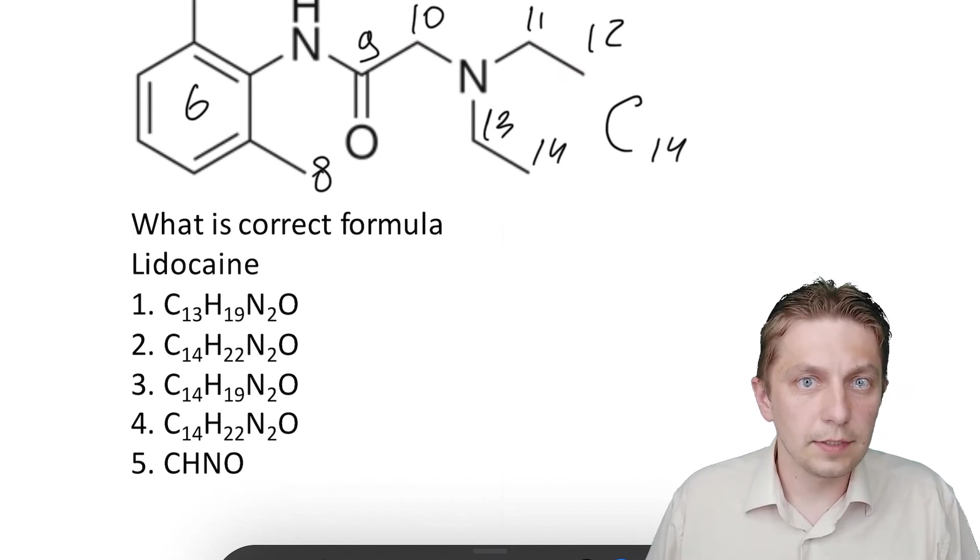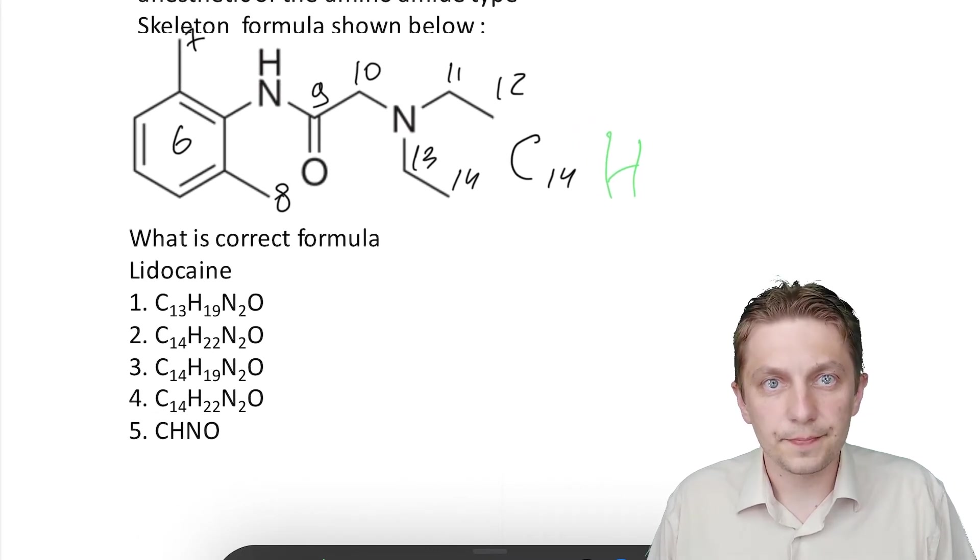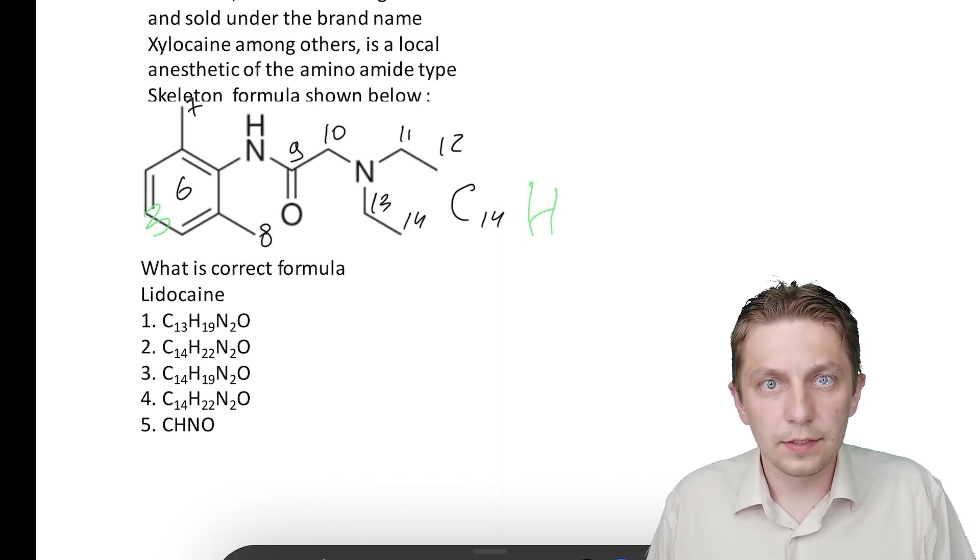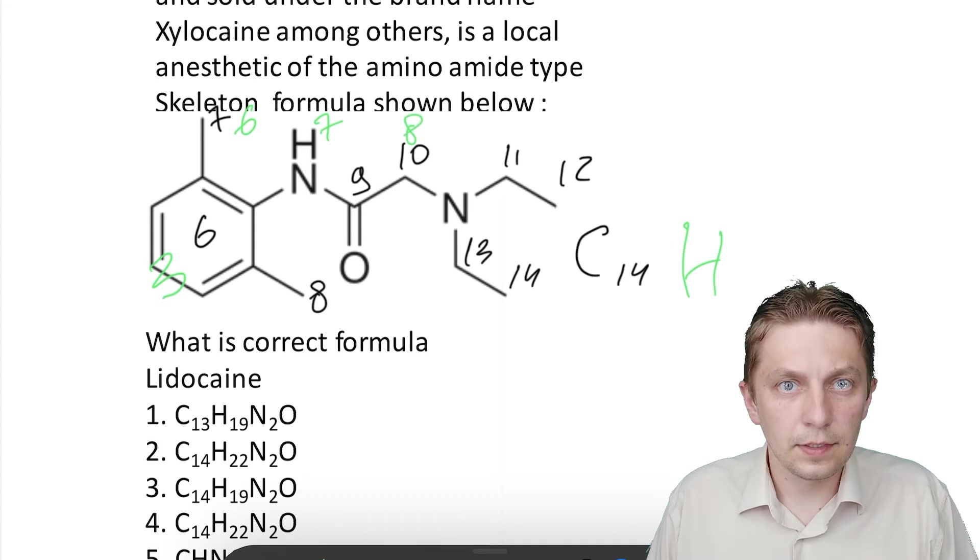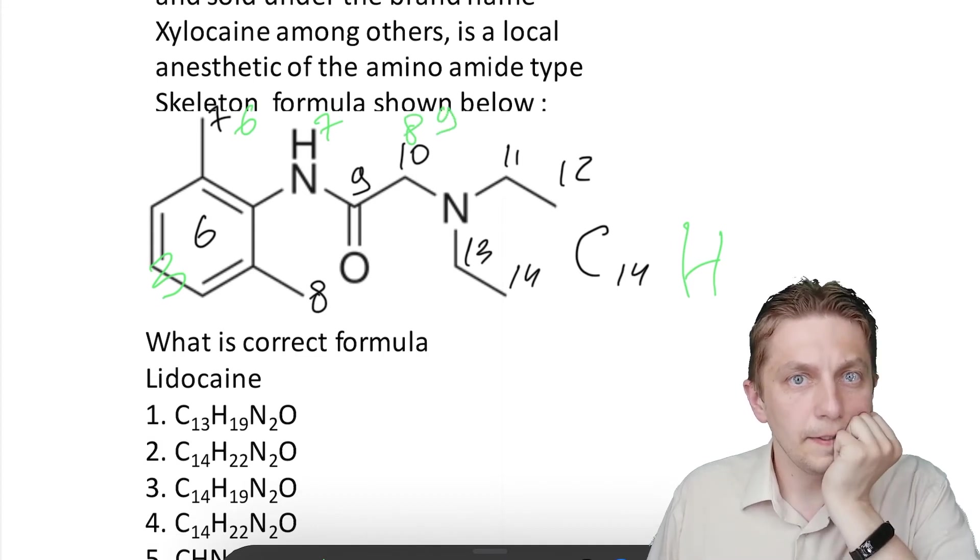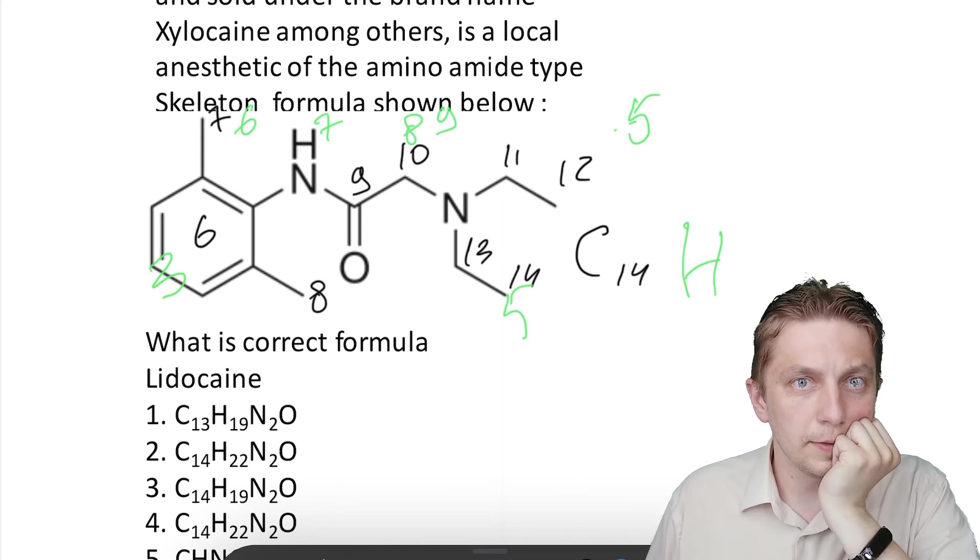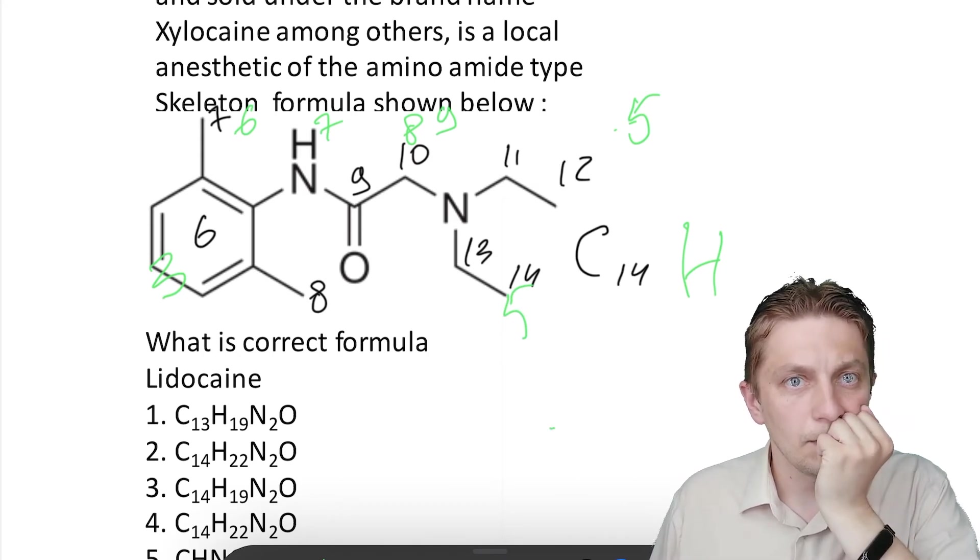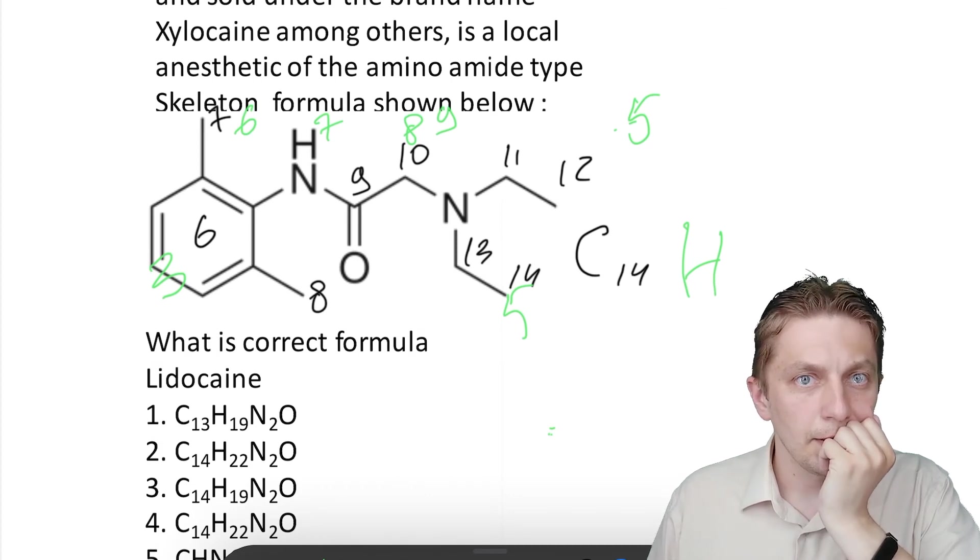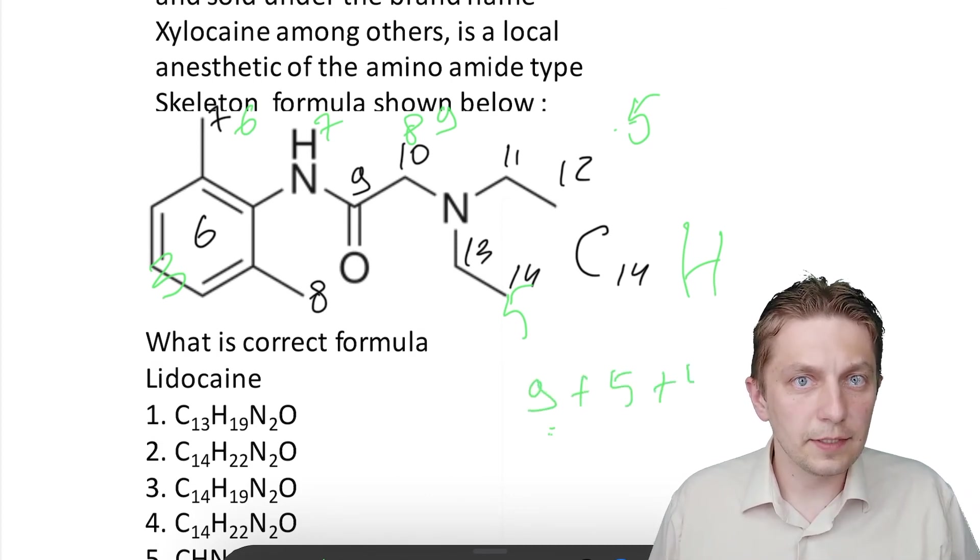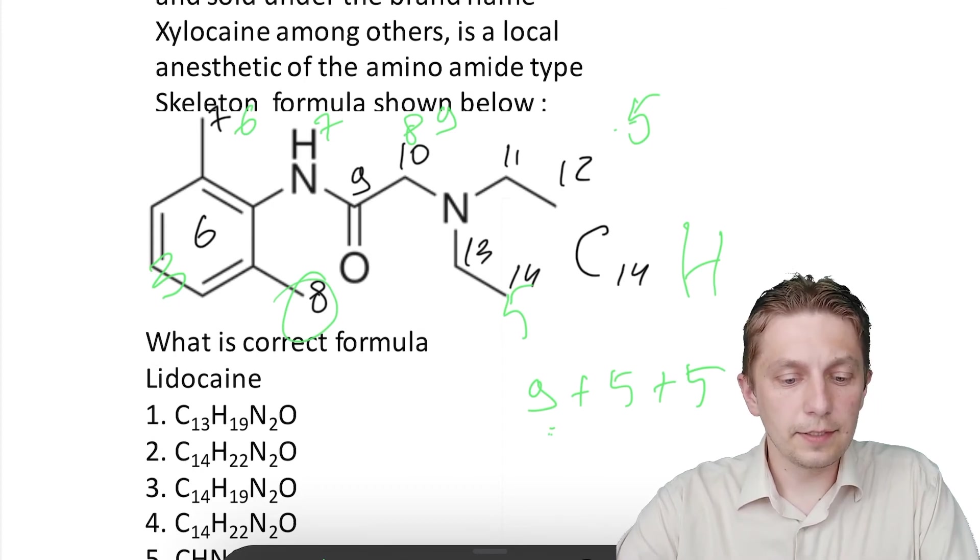Next hydrogen. Hydrogen is more complicated. Hydrogen here we have three, six, seven, eight, nine, plus five here and five here. I miss something. Nine plus five plus five plus five and three here, so we can use calculator - nine plus five plus five plus three.